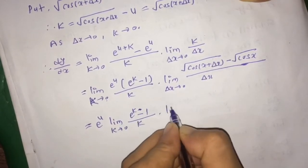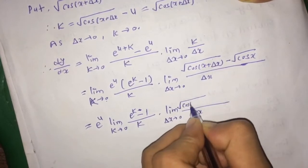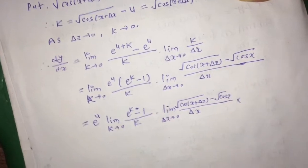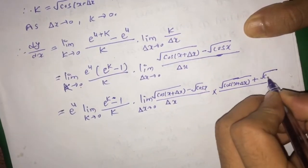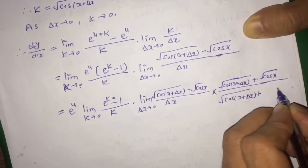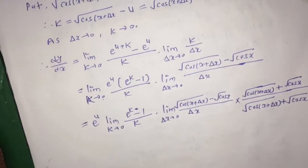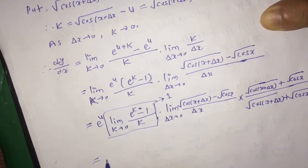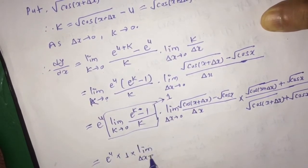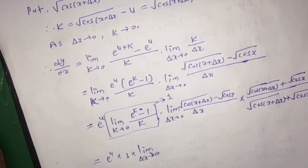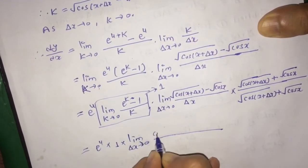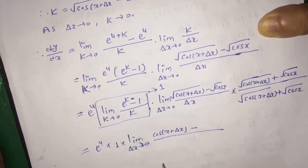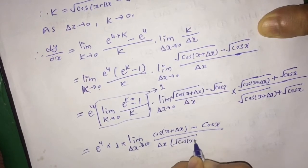Substituting the value of k in the limit, we get limit k tends to 0 of exponential(u) times (exponential(k) minus 1), whole divided by k, times limit δx tends to 0 of root under cos(x + δx) minus root under cos x, whole divided by δx. We then multiply the second limit by root under cos(x + δx) plus root under cos x, divided by root under cos(x + δx) plus root under cos x, so that we can apply the identity (a - b)(a + b) = a² - b².